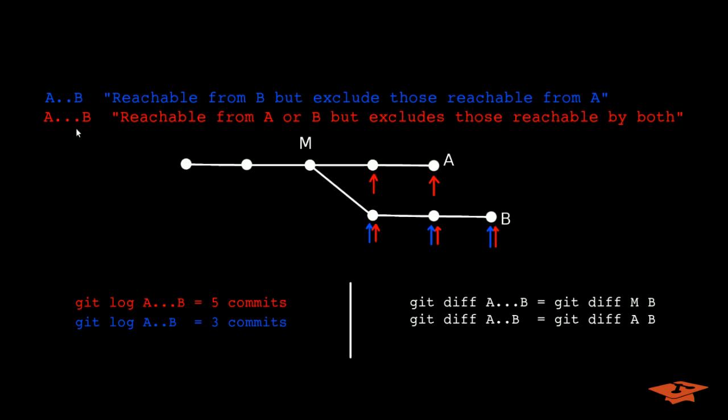The triple dot notation means commits that are reachable from A or B but excludes those reachable by both. If you go through the exercise we just did for the double dot notation, it means the commits that are highlighted by the red arrows on this graph. So really we're talking about the commits that are on A and B back to but not including the latest merge point of those two branches.